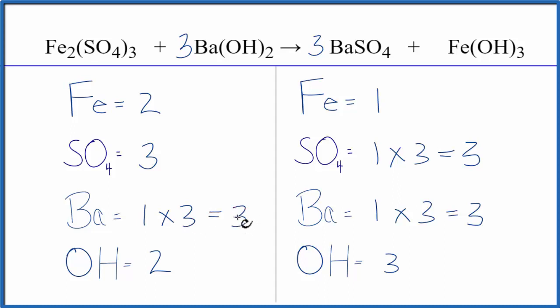And then hydroxides, we have two times the one, so we have two hydroxides times the three. That gives us six hydroxide ions. Let's balance the hydroxides by putting a two in front of the Fe(OH)3.